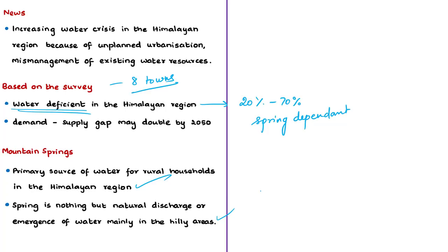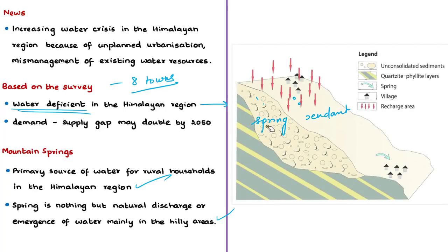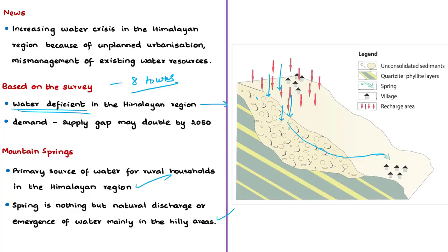A spring is a natural discharge or emergence of water, mainly in hilly areas. During the rainy season, rainwater percolates and slowly recharges the groundwater table, then re-emerges at suitable places as a spring. In addition to springs, other sources of water in the Himalayan region include ponds, lakes, canals, and rivers.